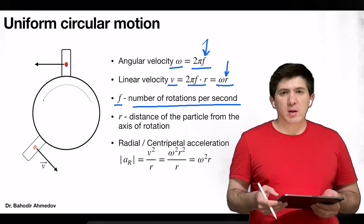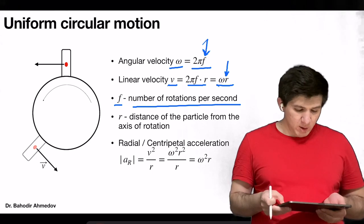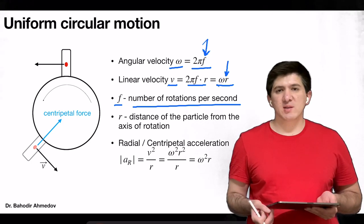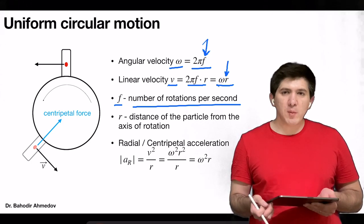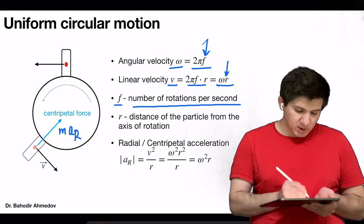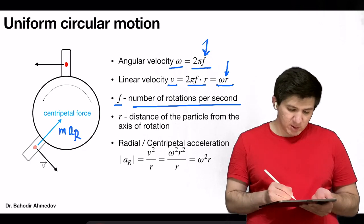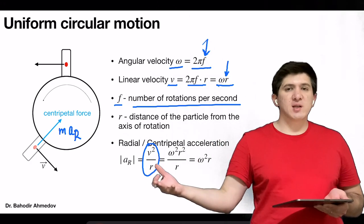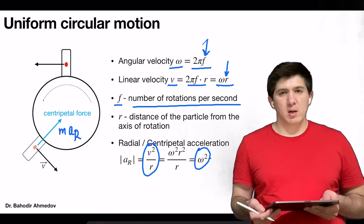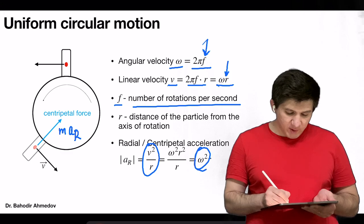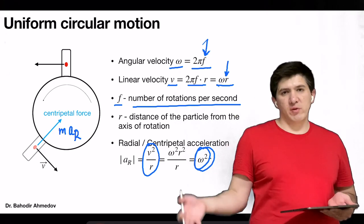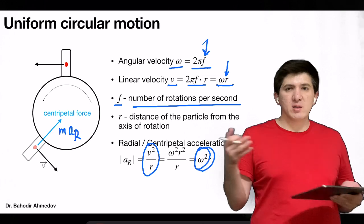As we move a particle around a circle, there is a centripetal force which tries to pull the particle towards the center of the circle. The centripetal force can be calculated by multiplying the mass of the particle by the radial acceleration. The radial acceleration can be calculated either as v² divided by r, or as ω² times r. Note that these two formulas are interchangeable — we can easily convert between angular and linear velocity by multiplying or dividing by the radius.